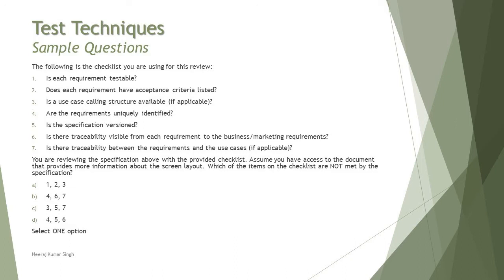There are certain checklist entities: is each requirement testable? Does each requirement have acceptance criteria? And many other things. You are reviewing the specification above with the provided checklist. Assume you have access to a document that provides more information about the screen layout — that's add-on information over the requirement and checklist. Which items on the checklist are not met by the specification? We need to compare the requirement and the checklist side by side.